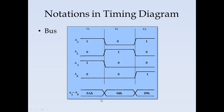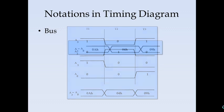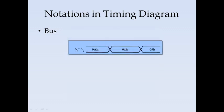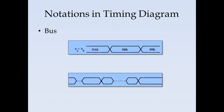A nibble can have a value from 0 to F. There is another notation where one representation shows the signal transition, and another represents the tristated or high impedance state of the bus. The address bus might be tristated or in high impedance at some point, represented by this notation.